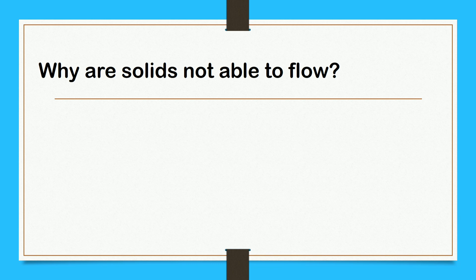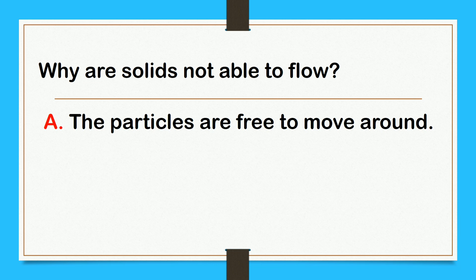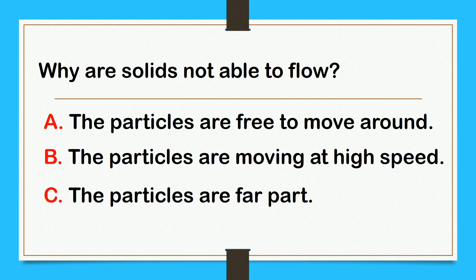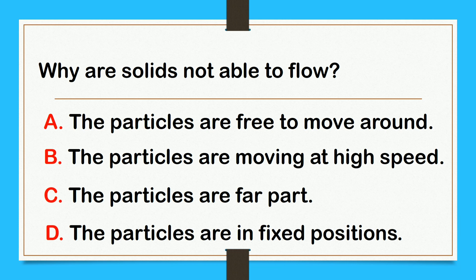Why are solids not able to flow? A, the particles are free to move around. Letter B, the particles are moving at high speed. Letter C, the particles are far apart. Or D, the particles are in fixed positions.